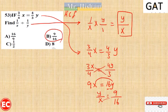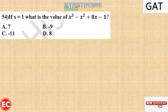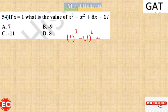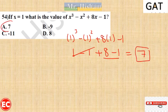Question 54 relies on properties of fractions. If x equals 1, find the value of x³ minus x² plus 8x minus 1. Substituting: 1³ minus 1² plus 8 times 1 minus 1 equals 1 minus 1 plus 8 minus 1. That gives 0 plus 7, so the answer is 7. The right answer is A.